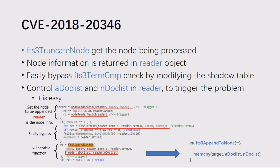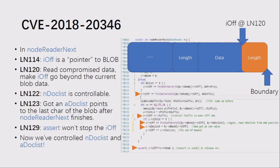Let's look at the caller function, truncateNode. It gets the binary offset and length from the blob data describing the node being processed, then the node information is returned in a reader object and passed to the vulnerable fts3_appendToNode. To control the memcpy in appendToNode, we need to control aDoclist and nDoclist, which are returned from nodeReaderNext. The aDoclist is a char pointer to the blob data source and nDoclist is the node size — the second and third parameters of memcpy respectively. Controlling them is not difficult.